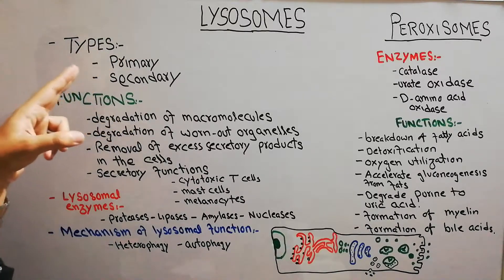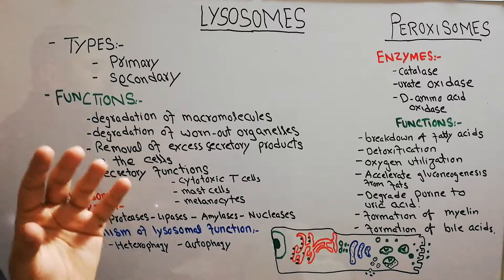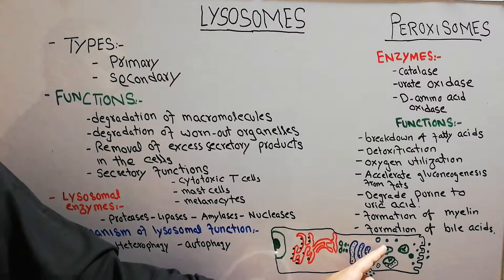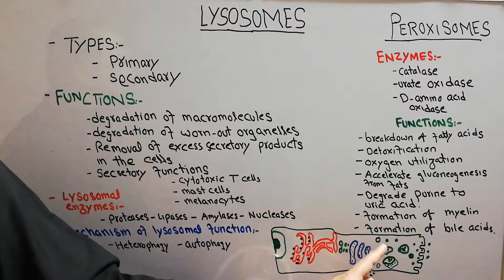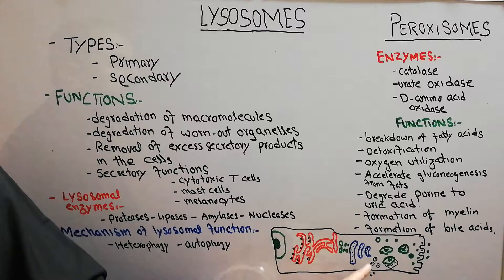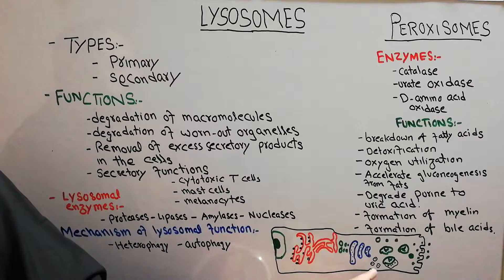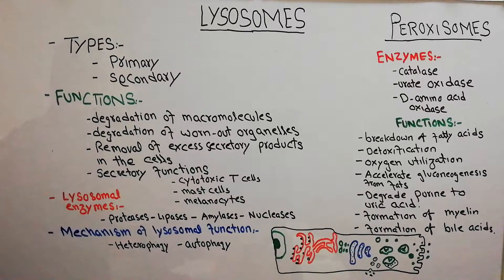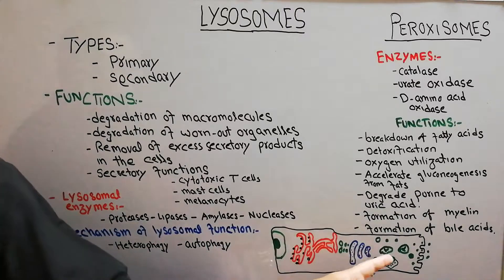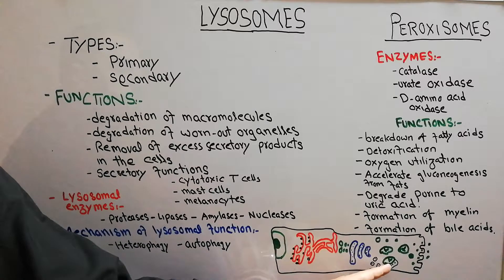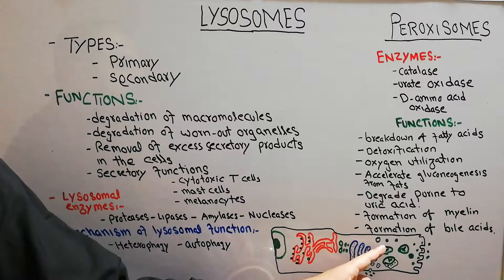If a vesicle is coming from the Golgi apparatus and has not combined with any other vesicle, endosome, or phagosome coming from outside the cell, then it is known as a primary lysosome. Once the lysosome combines with a structure coming from outside into the cell, it is known as a secondary lysosome.